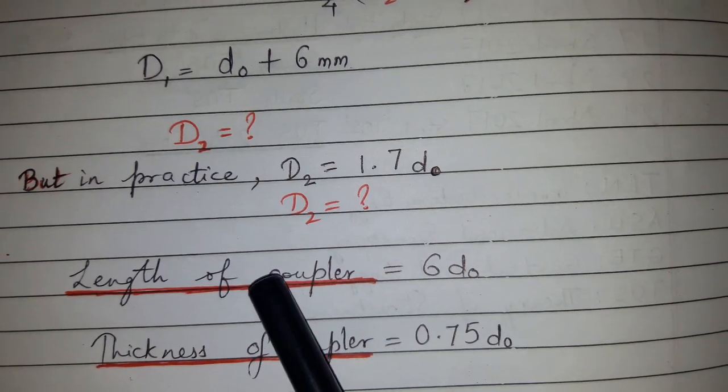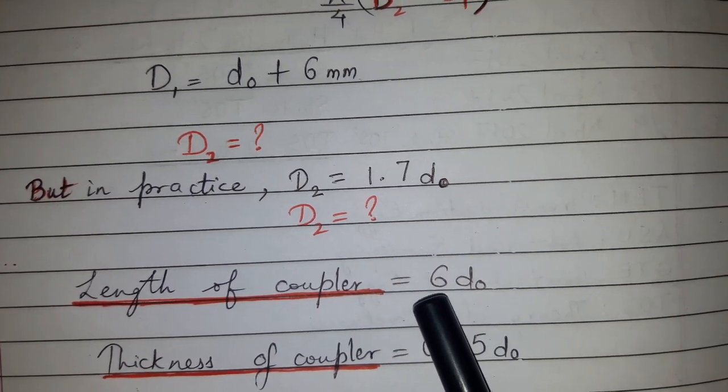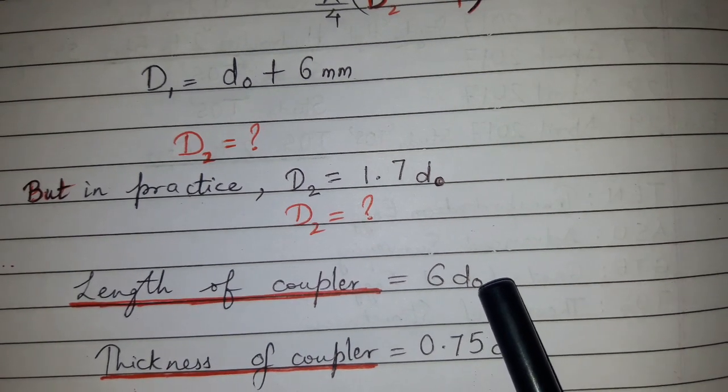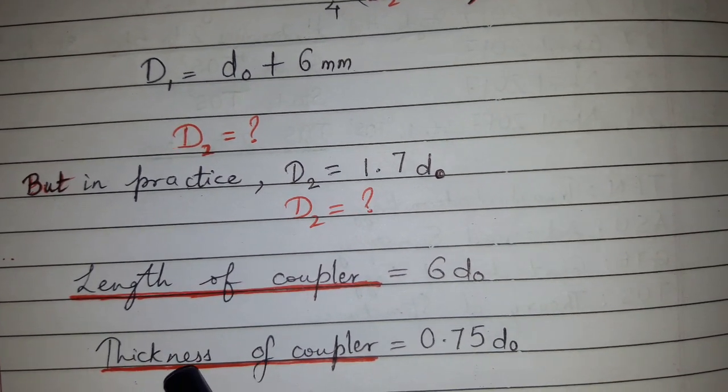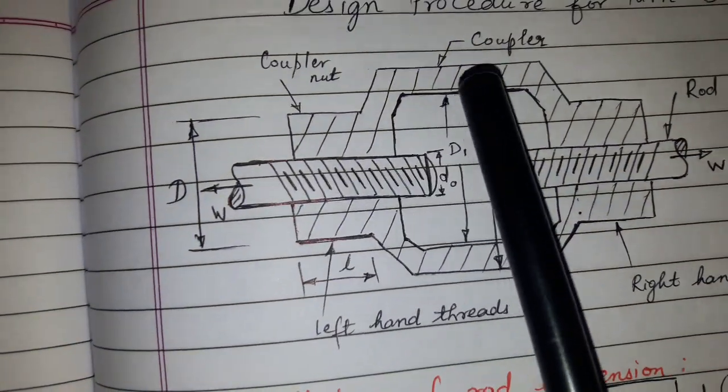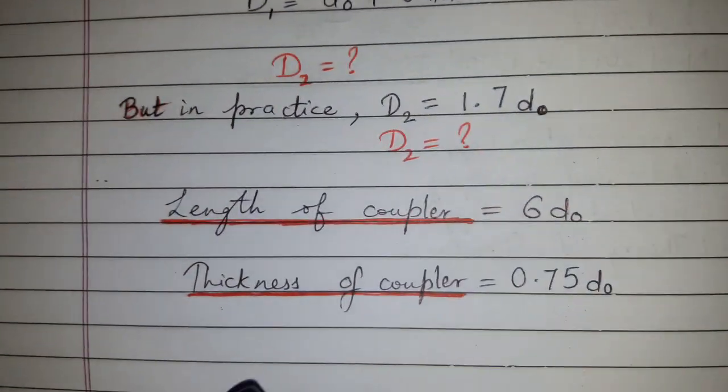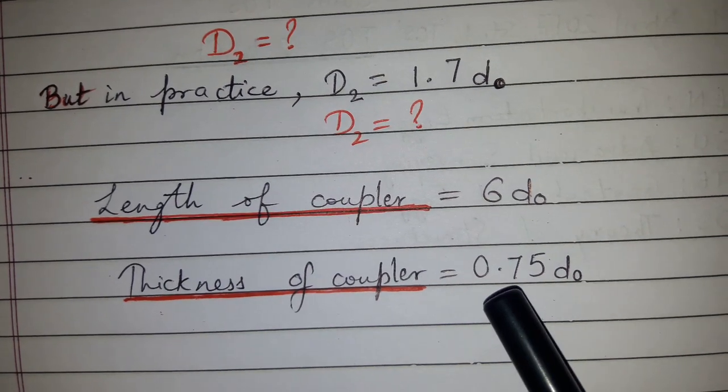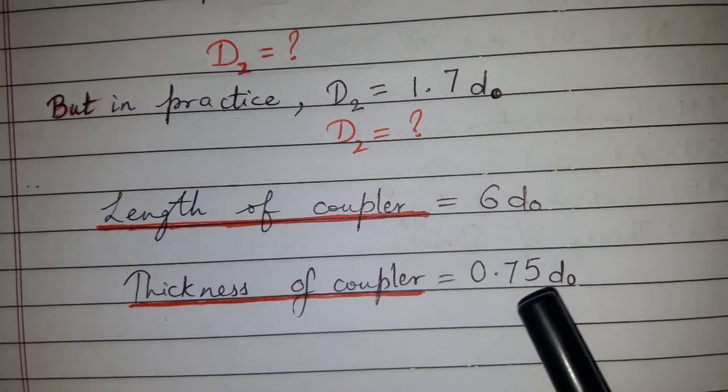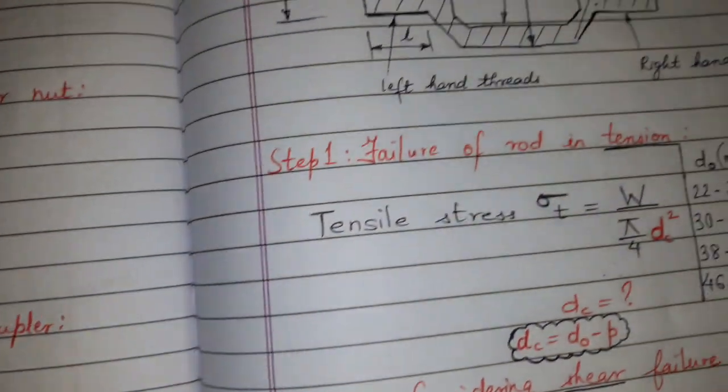Then we can find the length of the coupler, that is equal to 6 × D0, the nominal diameter times 6. Then the thickness of the coupler, which is this, we can find: thickness of the coupler equals 0.75 × D0. So this was the design procedure for turnbuckle.